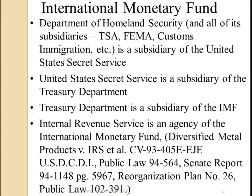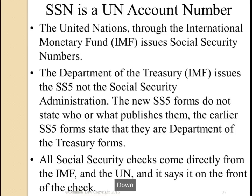The Department of Homeland Security and all of its subsidiaries — TSA, FEMA, Customs, Immigration, etc. — is a subsidiary of the United States Secret Service. The United States Secret Service is a subsidiary of the Treasury Department, and used to be called the ESS in Germany during the Second World War — it was set up by a Jesuit. Treasury Department is a subsidiary of the IMF. Internal Revenue Service is an agency of the International Monetary Fund — found at Diversified Metal Products v. IRS and Senate Report number 94-1148, page 5967.